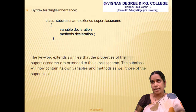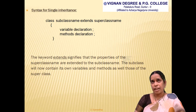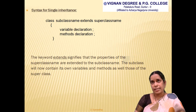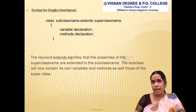Now we will look at the syntax of single inheritance. The syntax is: class SubclassName extends SuperclassName, and within the class we declare variables and methods. The keyword 'extends' is written after the subclass name. It specifies that all inherited properties are present within this class. The subclass will contain all inherited members as well as its own members.